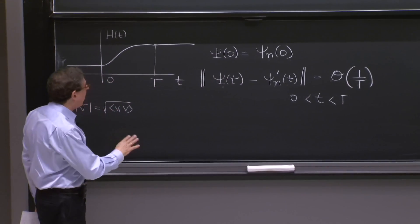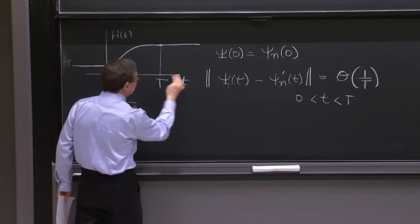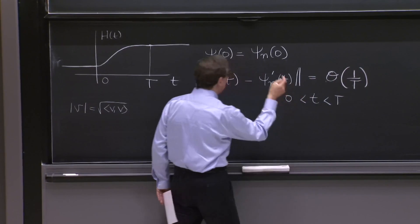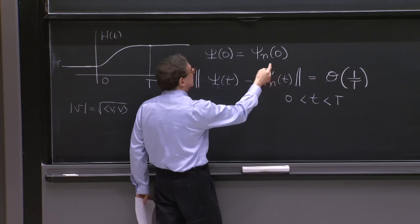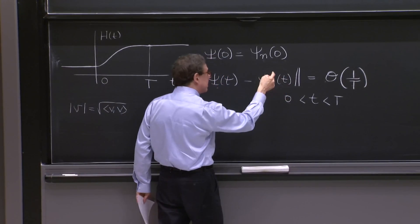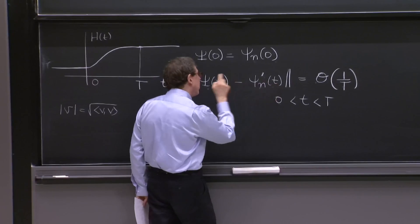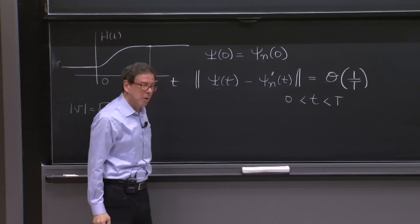the instantaneous eigenstate is very close to the true state. And the error is of order 1 over t. So if the process is slow, means that the change occurs over long t, this is a small number. And there is some instantaneous eigenstate with some peculiar phase, that's why I put the prime, for which this difference is very small.